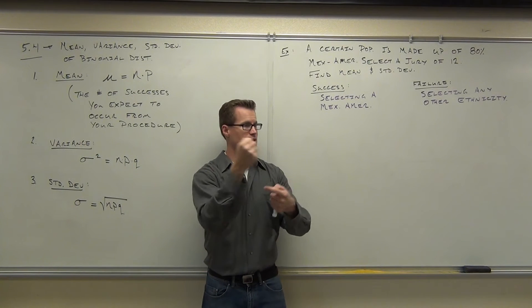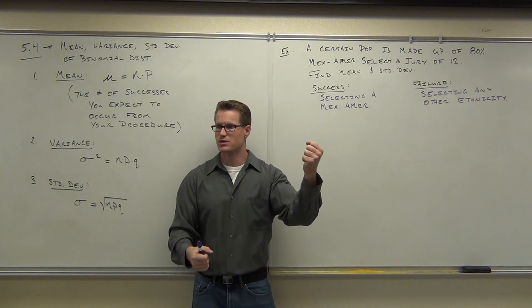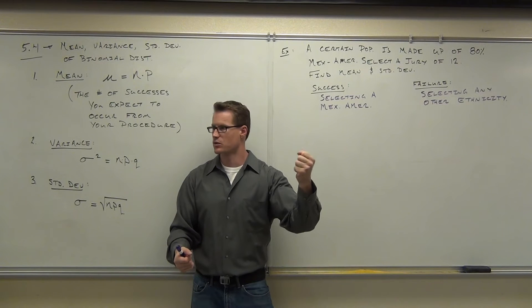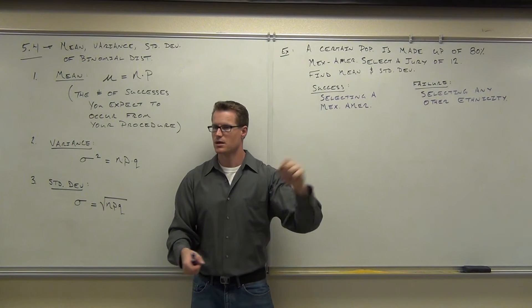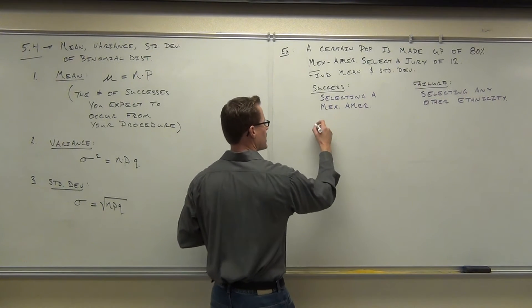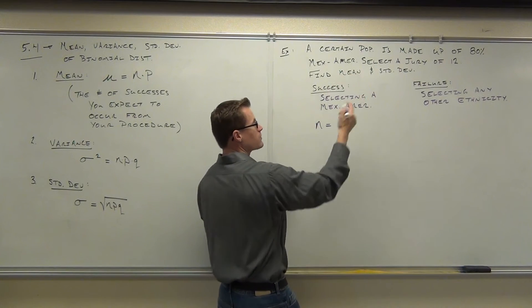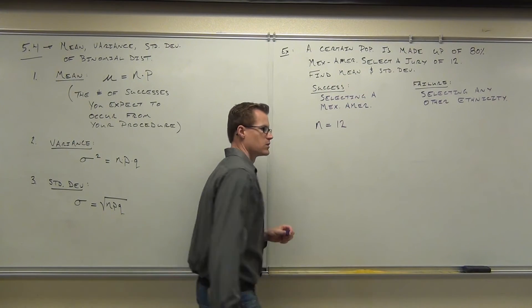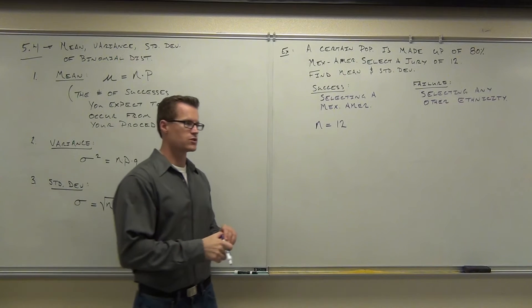Every time we would get a Mexican-American, that would be a successful trial. Every time we get anybody else, that would be an unsuccessful or a failure trial. You with me on this? So, let's identify some of these. Our N is, of course, twelve since we're selecting twelve people, twelve individuals for this jury.